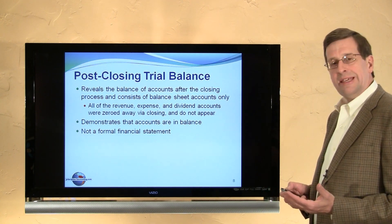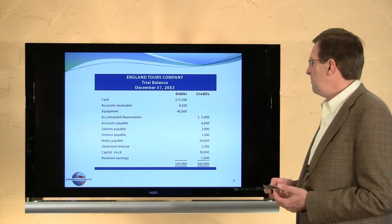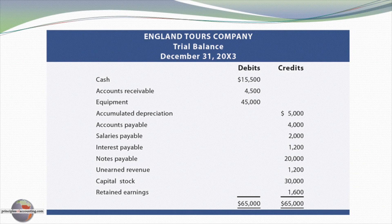This simply demonstrates that the accounts are in balance. It is not a formal financial statement. Here's an example for England Tours Company after the closing process. Note that each of those accounts is a balance sheet account. Total debits are $65,000 and total credits are $65,000, confirming the closing process has been successfully completed.